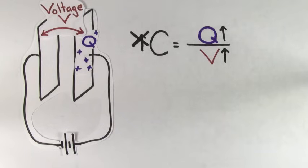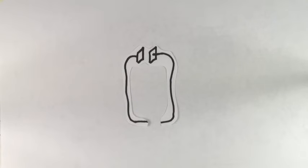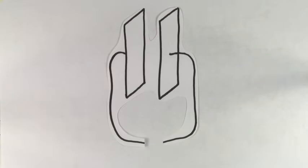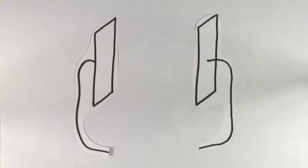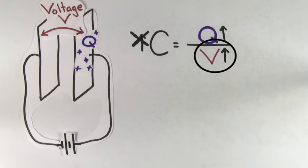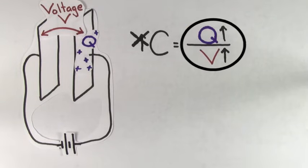The only way to change the capacitance of a capacitor is to alter the physical characteristics of that capacitor, like making the pieces of metal bigger or placing the pieces of metal further apart. Just changing the charge or the voltage is not going to change the ratio that represents the capacitance.